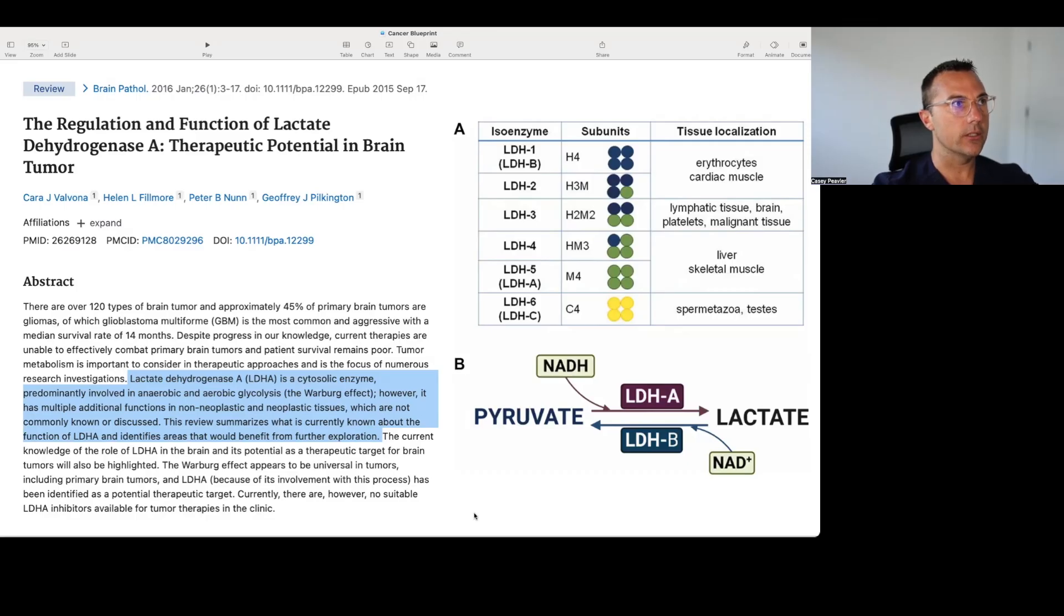Now, let's quickly talk about the function of LDH. So this paper was titled, The Regulation and Function of Lactate Dehydrogenase A: Therapeutic Potential in Brain Tumor. And it says here that lactate dehydrogenase A is a cytosolic enzyme predominantly involved in anaerobic and aerobic glycolysis, or the Warburg effect, or as Dr. Seyfried calls it, cytosolic substrate-level phosphorylation. However, it has multiple additional functions in non-neoplastic and neoplastic tissues which are not commonly known or discussed.